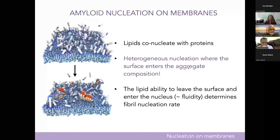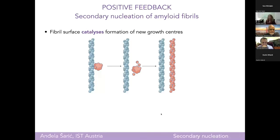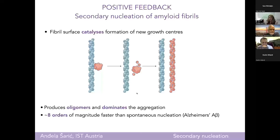To summarize this part: lipids co-nucleate with proteins in a new type of nucleation where the surface enters the aggregate composition. What's really key is not fluidity per se, but the fact that fluidity correlates with the ease of extraction of lipids out of the membrane. Now, in the last eight minutes or so, I'll tell you about fibril self-replication — so-called secondary nucleation — which occurs via oligomers. You might wait a very long time to get the first fibril, but then this process is so much faster than initial nucleation — for A-beta it's found to be eight orders of magnitude faster.